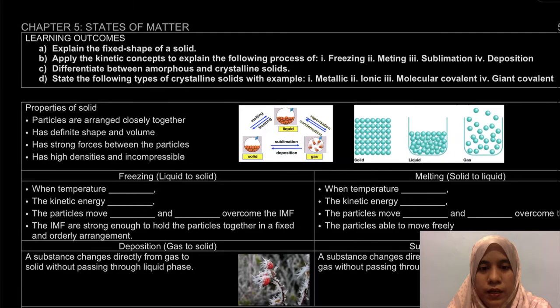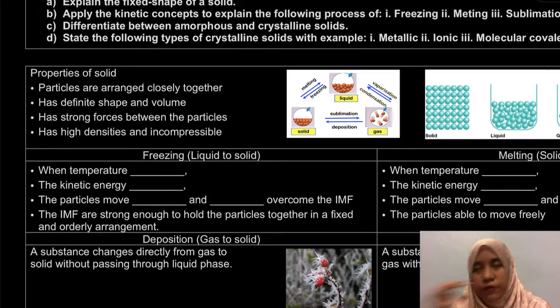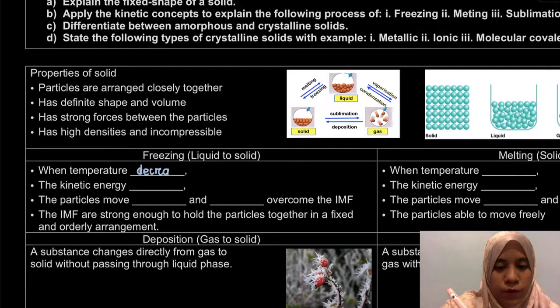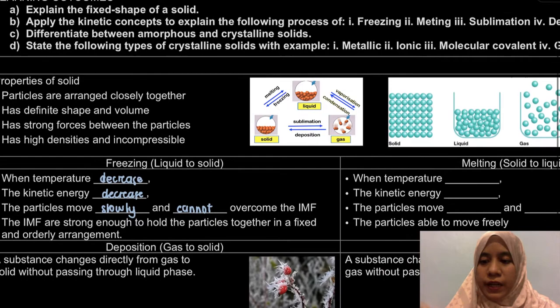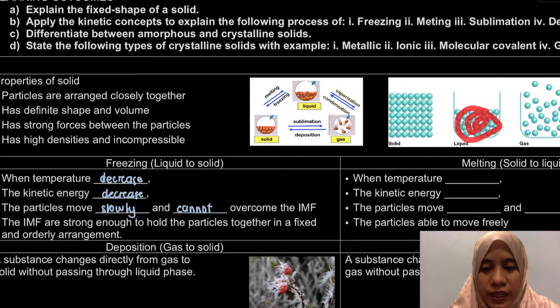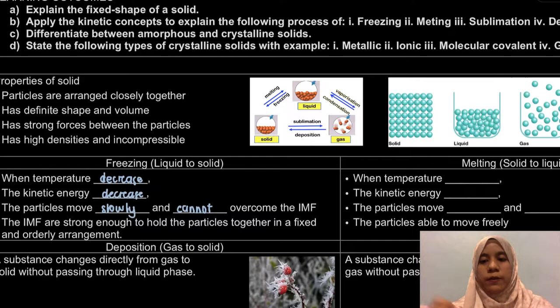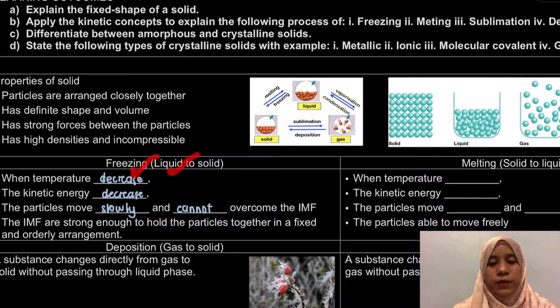Next we're going to look at the process of solid. For the solid itself, we have the process of freezing. Freezing is like when we freeze water to make ice. What happens for freezing? It occurs when the temperature is lowered or when temperature decreases. What would happen is that the kinetic energy decreases. The particles move slowly, very slowly, and become closer together. They cannot overcome the intermolecular forces. So the intermolecular forces are strong enough to hold the particles together in a fixed and orderly arrangement. That is for freezing, liquid to solid.